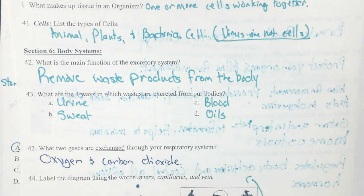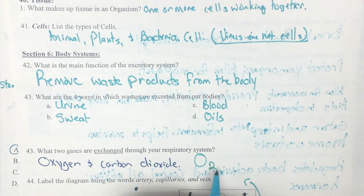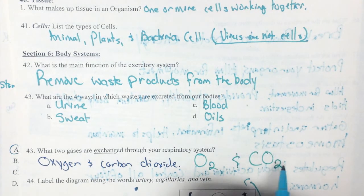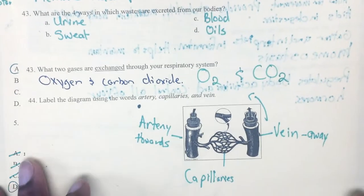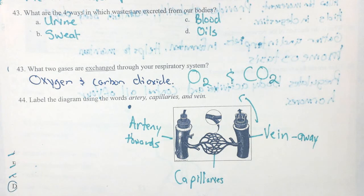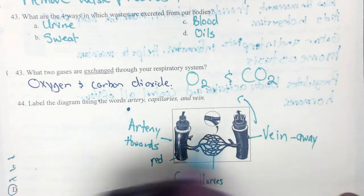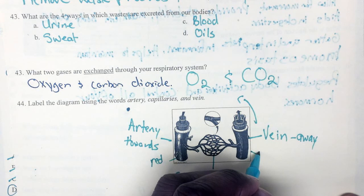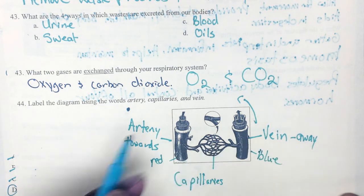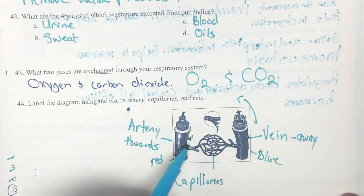Waste is excreted four ways: as urine, sweat, through blood, and as oil through your skin. The two gases exchanged through the respiratory system are oxygen (O2) and carbon dioxide (CO2). Number 44 asks you to label artery, capillaries, and veins on a diagram. The artery is normally red in color and carries blood away from the heart. The vein goes toward the heart and is normally blue in color. Gas exchange happens in the capillaries, which are a mixture of vein and artery, and are also wrapped around the alveoli in the respiratory system.